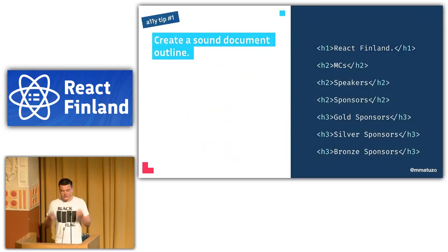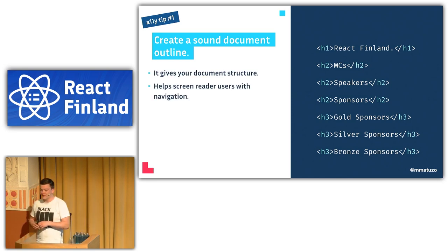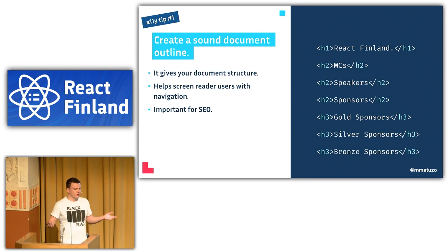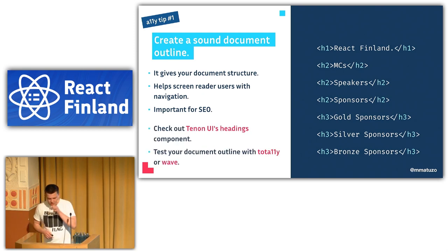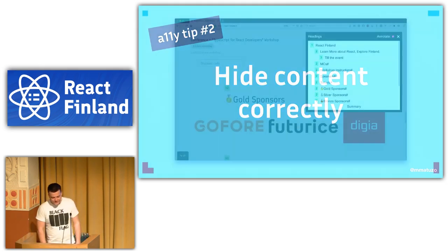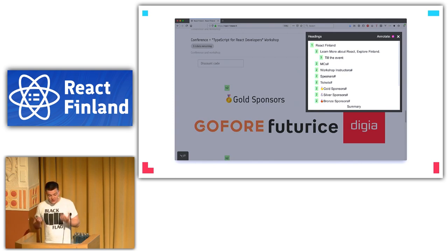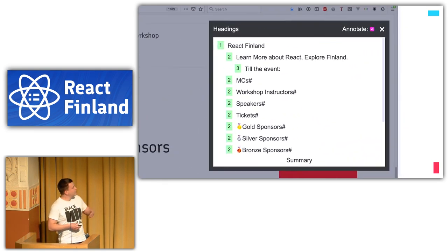In summary: create a sound document outline because it gives your document structure, helps screen reader users with navigation, and is also important for SEO. My second tip is: hide content correctly. On the React Finland website, the structure is very well done — it starts with an h1 followed by h2s.